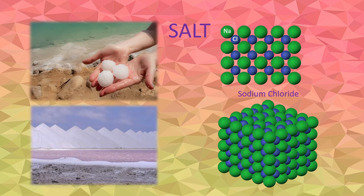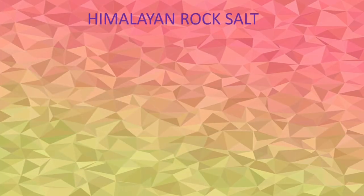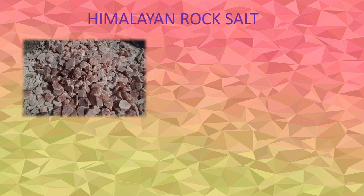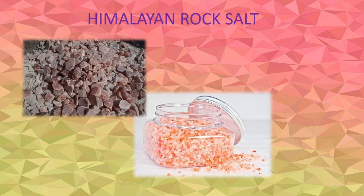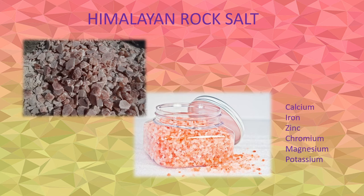While most table salt we consume is white in color, the Himalayan rock salt, which is mainly mined at the Salt Range Mountains of Punjab region in Pakistan, has a pinkish appearance due to the presence of trace elements such as calcium, iron, zinc, chromium, magnesium, and potassium. Let's have a look at the quartz crystal, which is made from the two most abundant elements on Earth: oxygen and silicon.